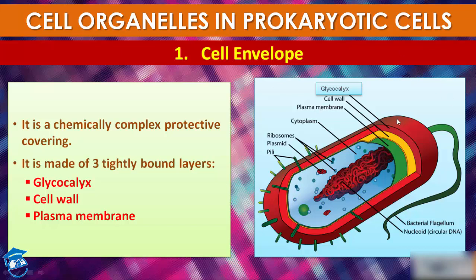This is the typical representation of a bacterium. The outermost layer is glycocalyx, the yellow one is cell wall, and the green one is plasma membrane. These three tightly bound layers together form the cell envelope, and the matrix inside is called cytoplasm. The ribosome, plasmid (which is extrachromosomal), and nucleoid (not enveloped by nuclear membrane) are also visible.